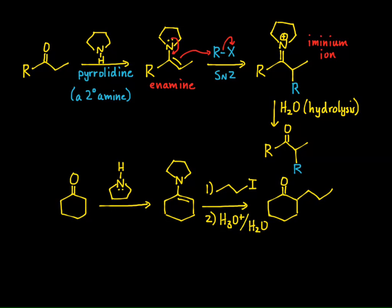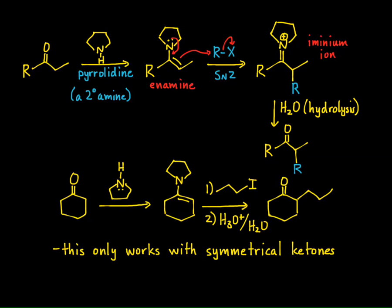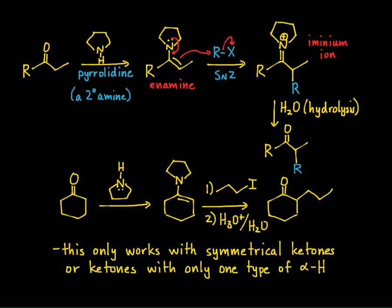There are some limitations to this type of reaction — it works only with symmetrical ketones or ketones that have only one type of alpha hydrogen. The reason is that if it had two types of alpha hydrogens, you would form a mixture of products. That wraps up how we alkylate various types of carbonyl compounds.